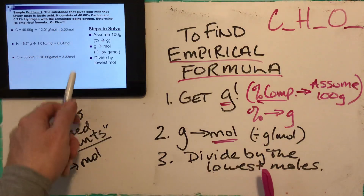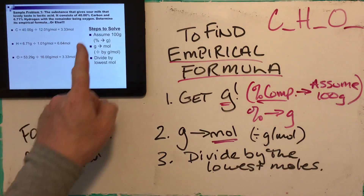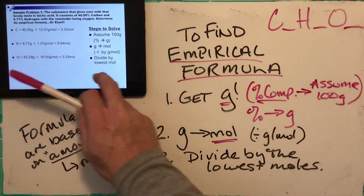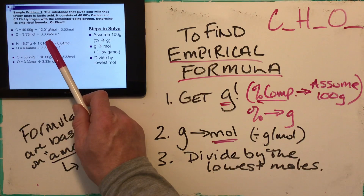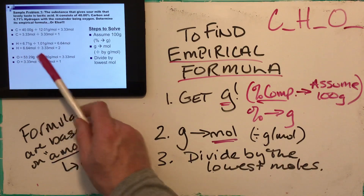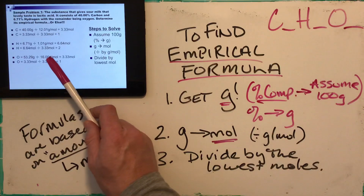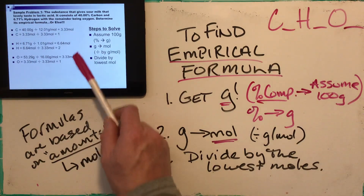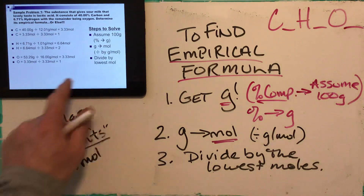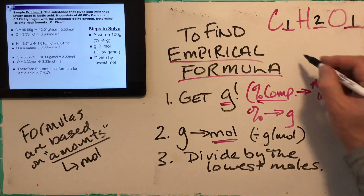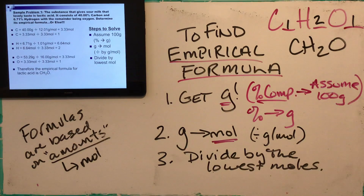Step three — divide by the lowest mole number. Looking at my three mole values — 3.33, 6.64, and 3.33 — my lowest value is 3.33. Carbon: 3.33 divided by 3.33 equals 1. Hydrogen: 6.64 divided by 3.33 equals 1.97, which rounds to 2. Oxygen: 3.33 divided by 3.33 equals 1. So my empirical formula is C1H2O1, or written properly: CH2O.